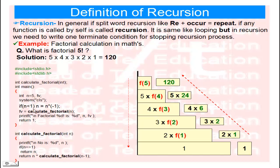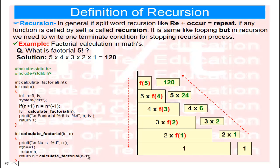Inside the main function, we check the same condition: if the number is negative, multiply by minus 1 to convert it to positive — otherwise the recursion would run infinitely. Then we call and pass the value to calculate_factorial. No loop is used here, just the function name. If we pass 5, the function receives 5. We check: does n equal 1? No, 5 does not equal 1, so we go to the next step: 5 multiplied by calculate_factorial(4).